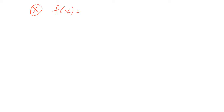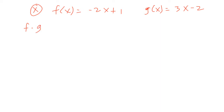Next, let's multiply two functions. Given f(x) = -2x + 1 and g(x) = 3x - 2, multiplying functions is the same as multiplying two algebraic expressions or two binomials. You can write this as f · g of x, or simply fg of x — both mean the same thing.